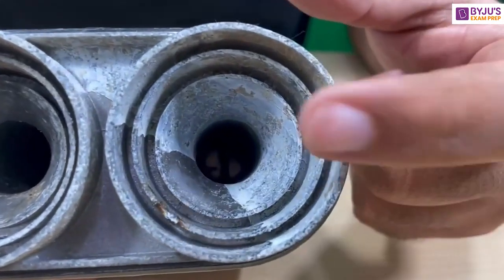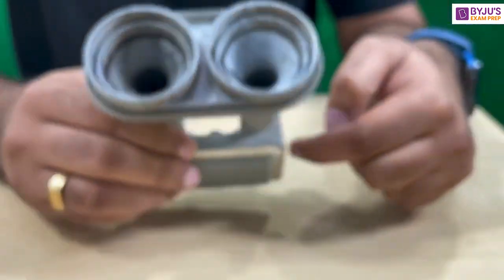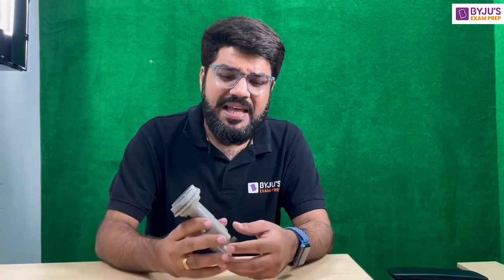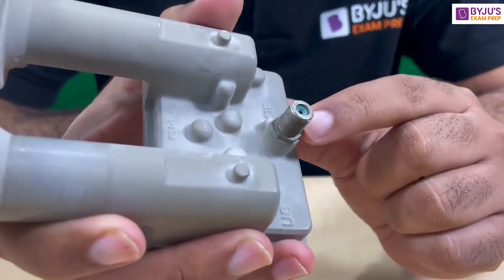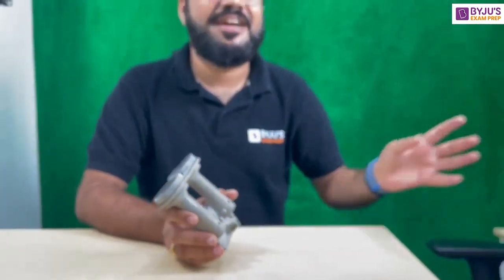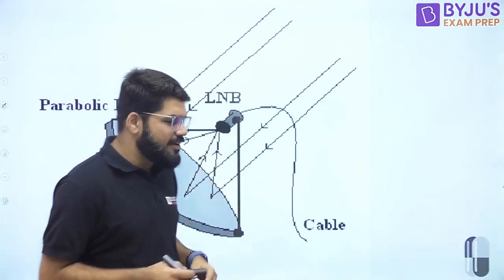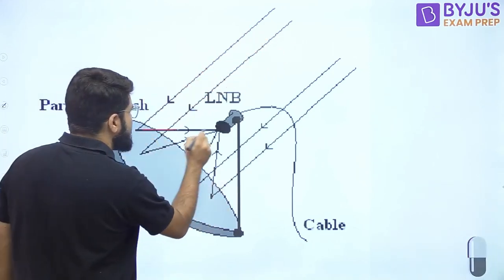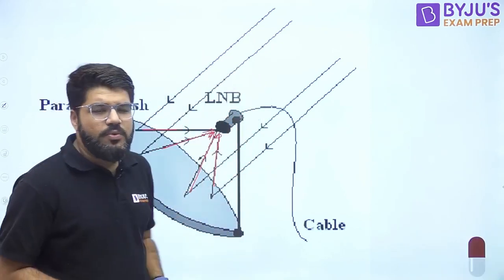Looking at the LNBF closely: at the front you can see the horn antenna connected to the waveguide, which leads to a probe inside. The probe transfers the signal to the PCB inside this module. The PCB handles signal processing — amplification and filtering out unwanted frequencies. The final processed signal is then transmitted via a coaxial cable connected at the outlet unit to your setup box, which is connected to your TV.